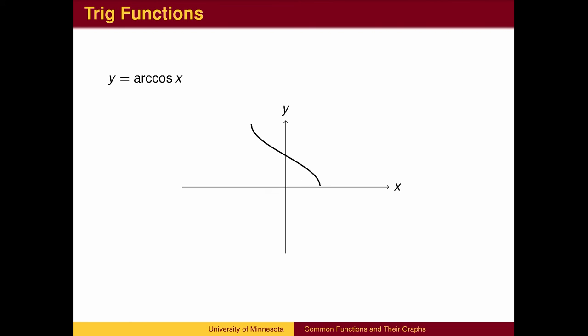The inverse of the cosine function, also called arccosine, outputs angles associated with cosine values. The domain is the possible cosine values from negative 1 to 1. The range is the angles in the first and second quadrant from 0 to pi.